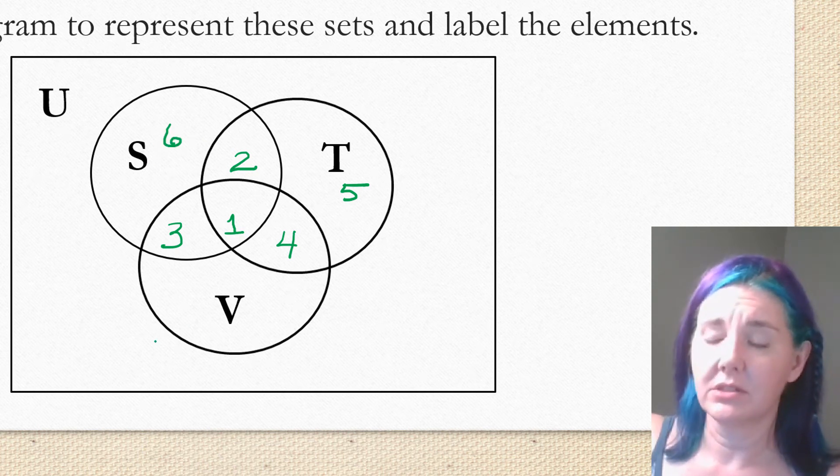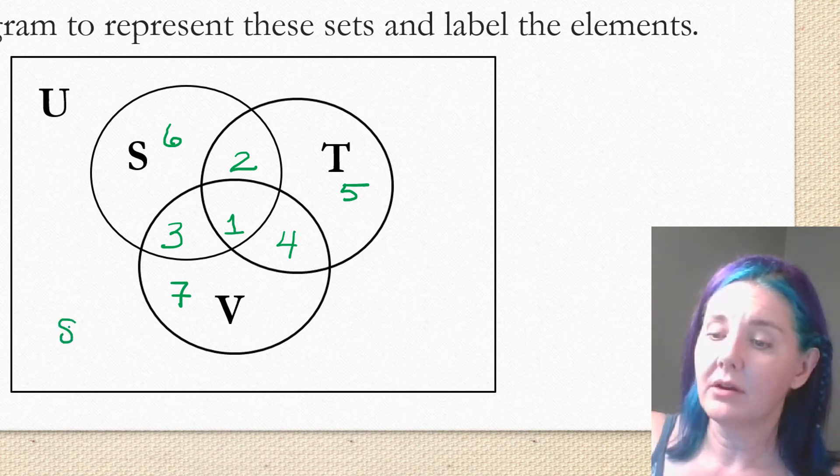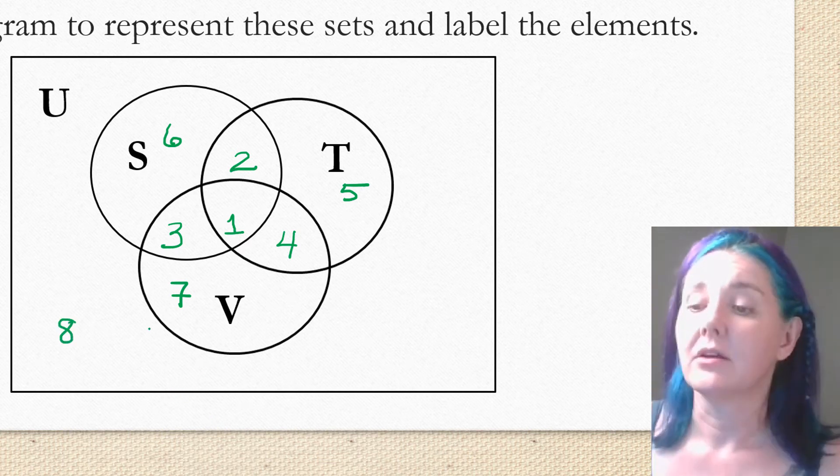Part that's just in the set S, region six. The part that's just in V, I'm going to call region seven. And then this outside part, that's not in any of the sets. I'm going to call that region eight.